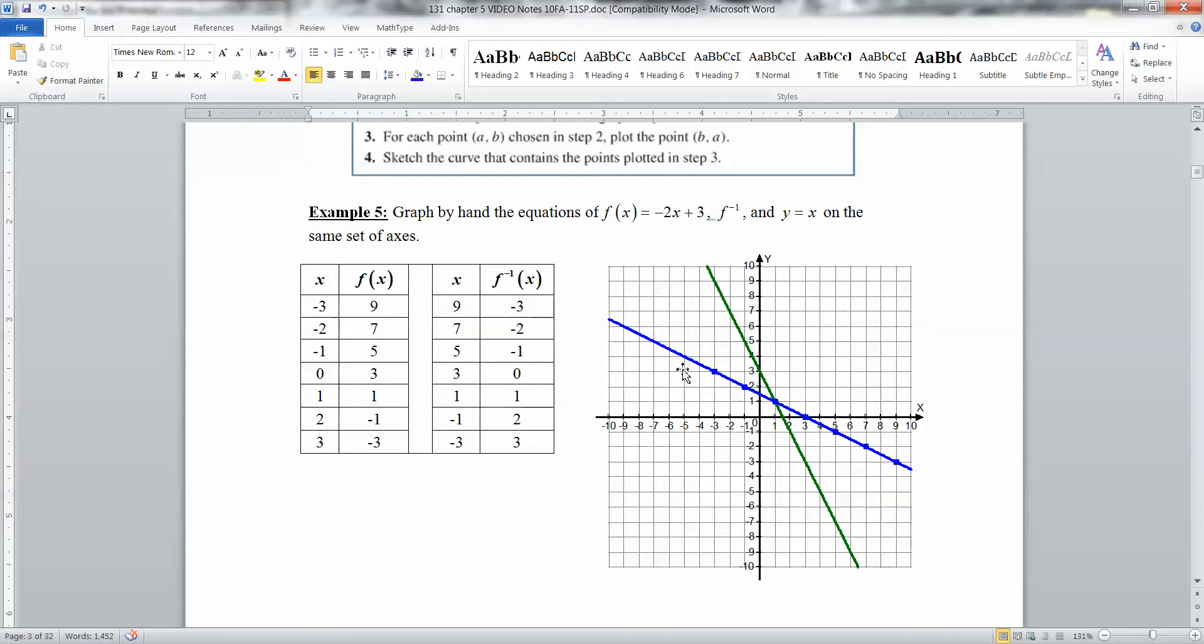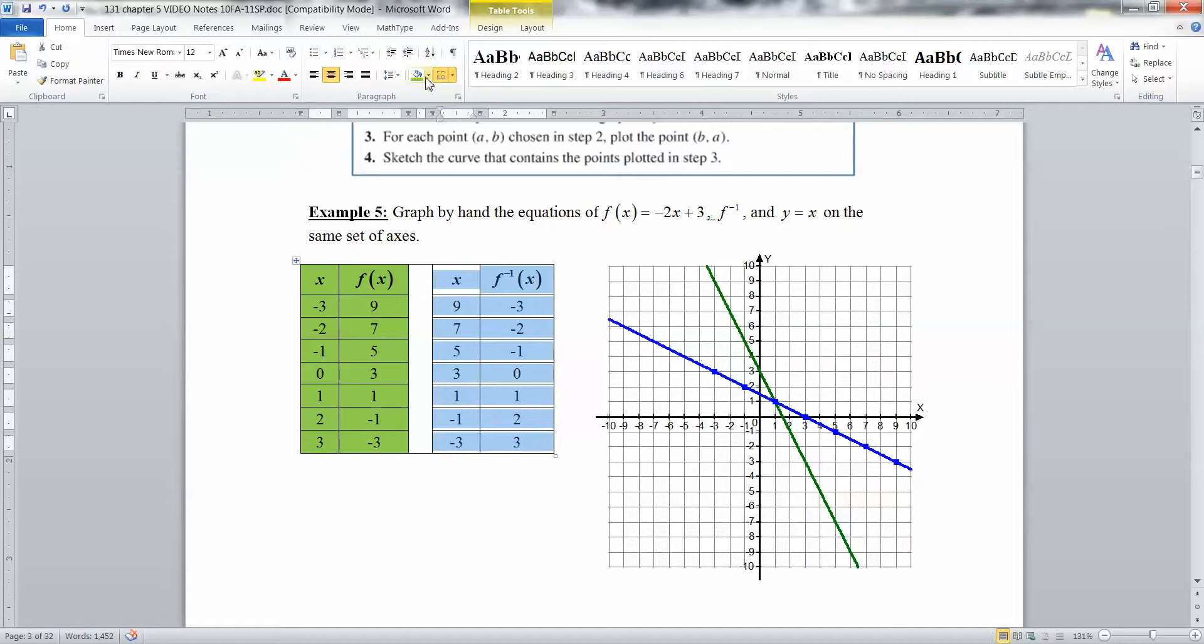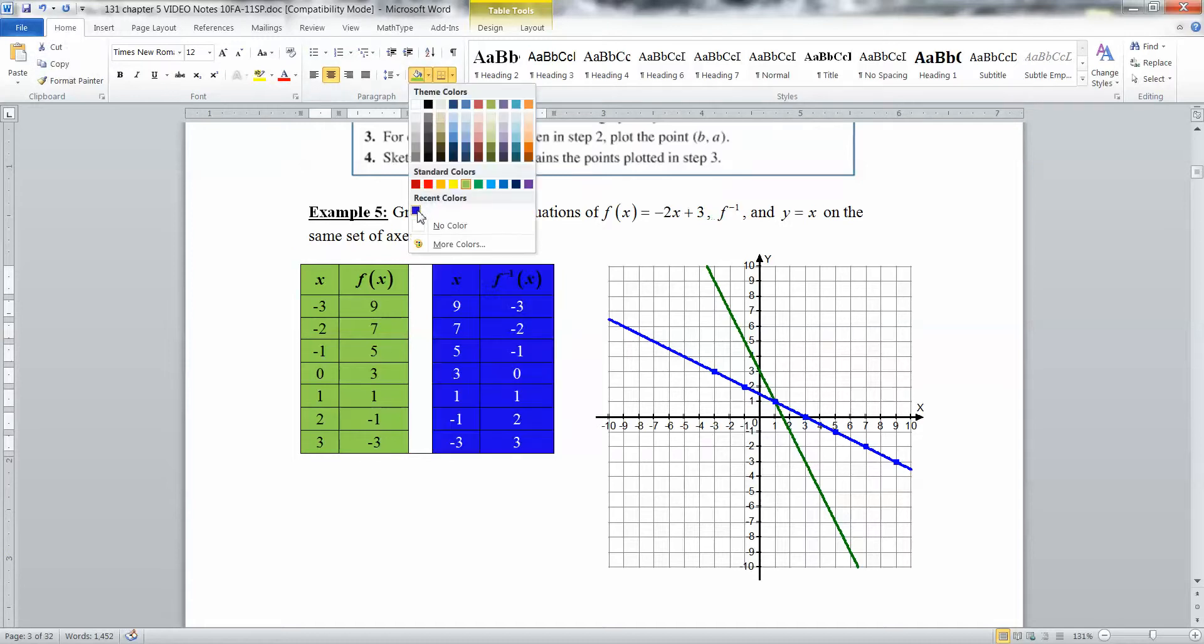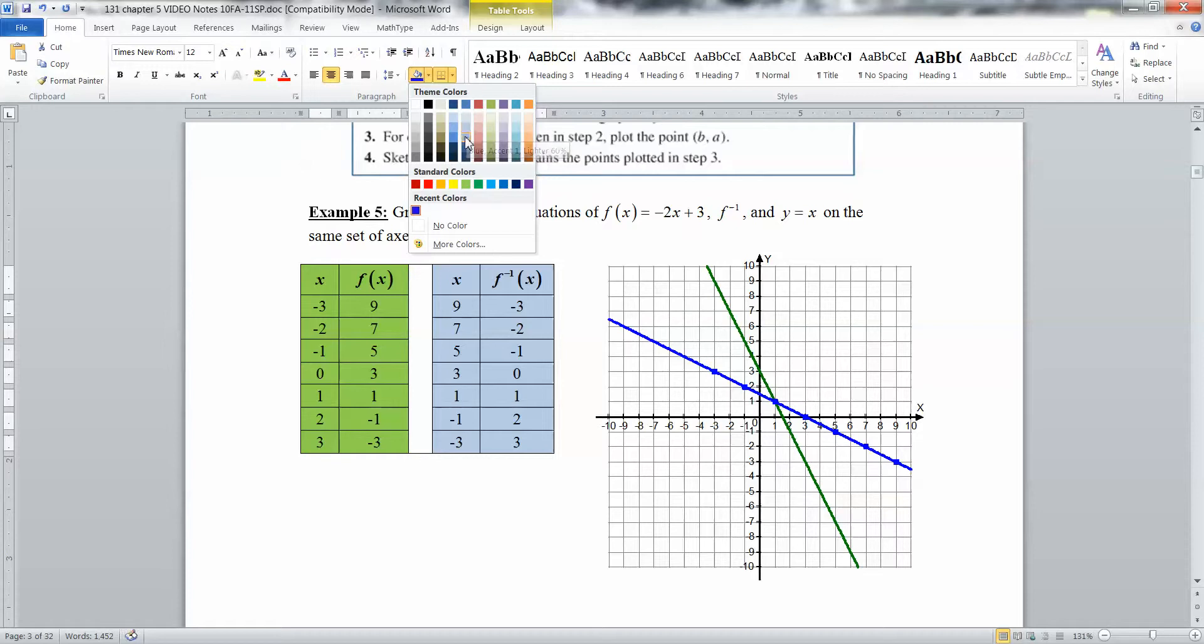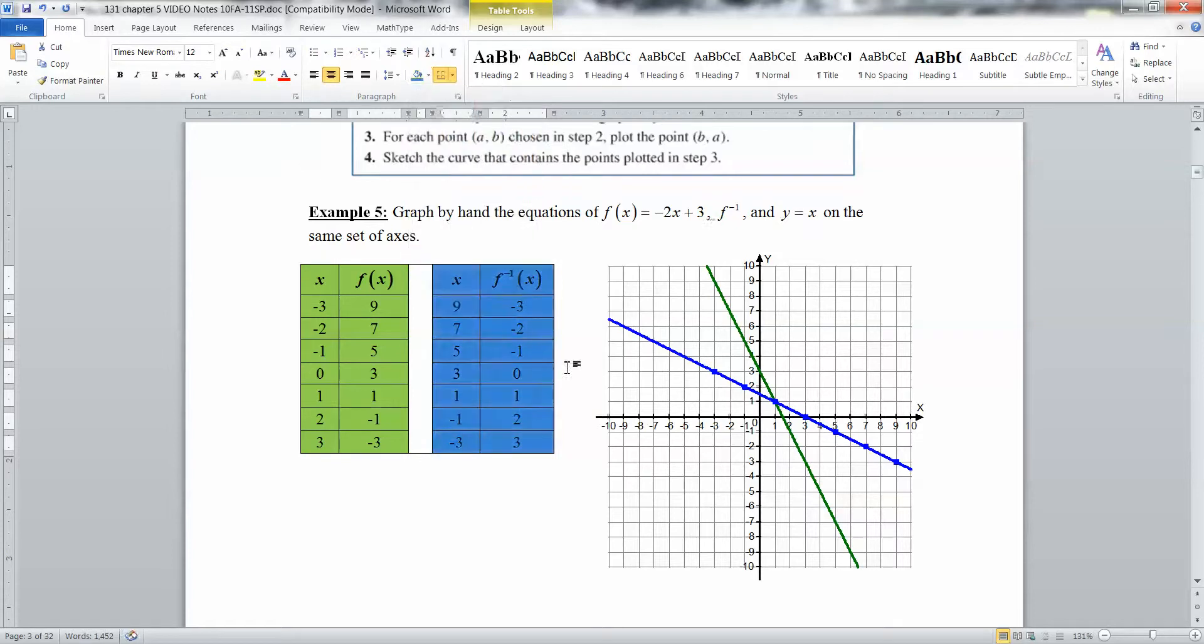So we've graphed the real function, which I graphed in green. So the function I graphed in green is the original function. And then I graphed the inverse function in blue. Hopefully you're not colorblind. That's terrible. I don't want to do that to you. How about I make it like a soft blue? But you get the general idea.